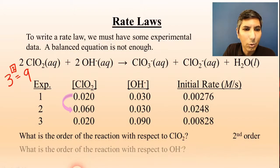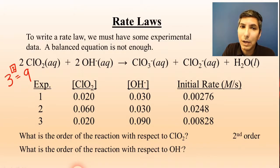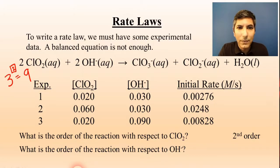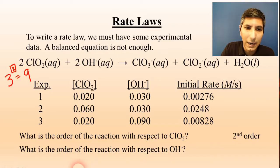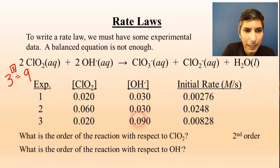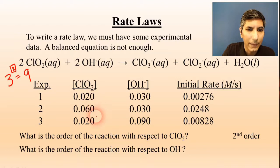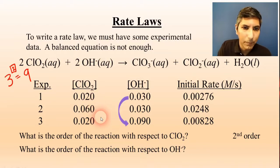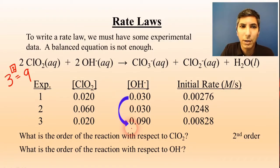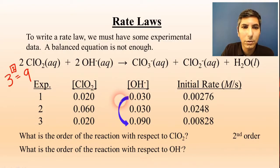Now if we want to find the order of the reaction with respect to hydroxide, we do the same thing except with hydroxide. We need to find two experiments where hydroxide is the only reactant being changed. Experiments two and three won't work because both hydroxide and chlorine dioxide are changing. So let's do experiments one and three — hydroxide is being tripled from experiment one to experiment three, while chlorine dioxide is held constant.